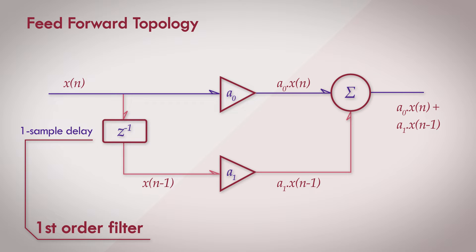There is no feedback from the output to the input, which is a trait of the feedback filters that we'll see later. Let's look at a concrete example of this filter. Let's assign values to the coefficients a0 and a1.